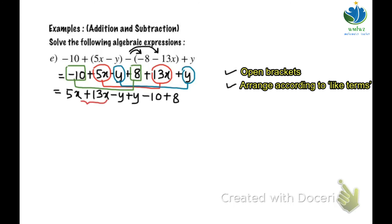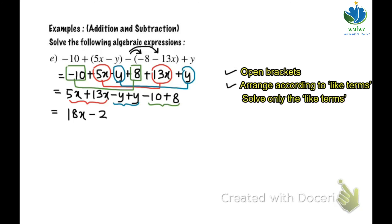Solve the like terms. 5x plus 13x gives 18x. Negative y plus y is 0, so we don't write it. Negative 10 plus 8 is negative 2. And this is the last answer.